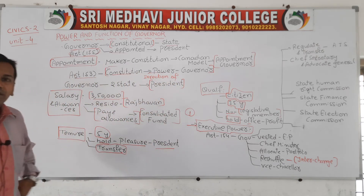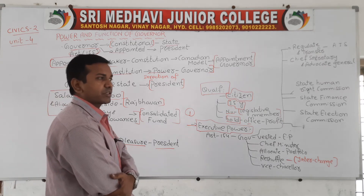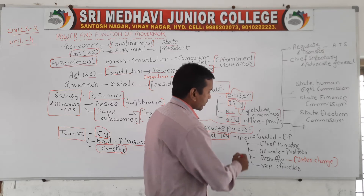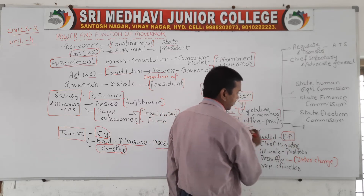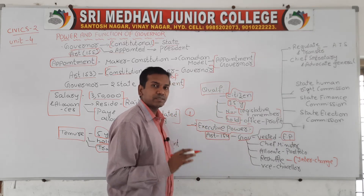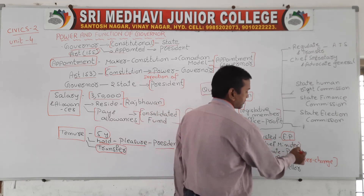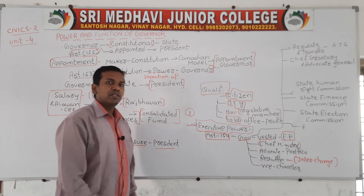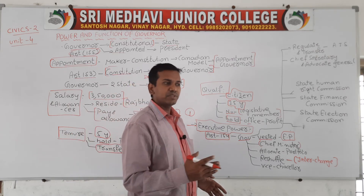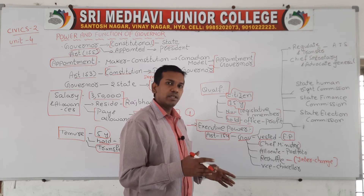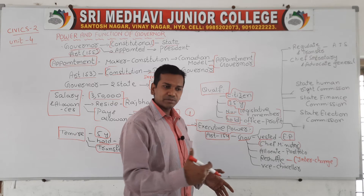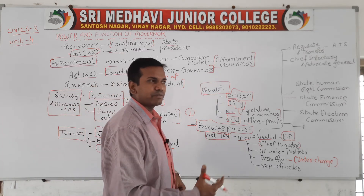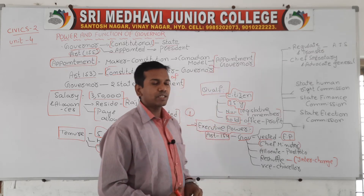Now we will discuss the executive powers of the Governor. According to Article 154, the Governor has many executive powers. The first executive power is that the Governor has the power to appoint the Chief Minister. While Chief Ministers are elected through elections based on the number of seats won, the formal appointment is made by the Governor, who also gives the invitation to the Chief Minister.